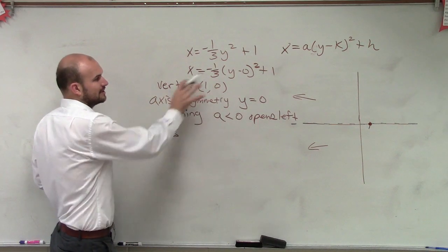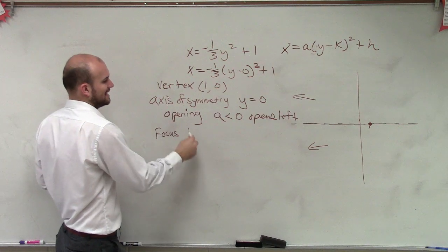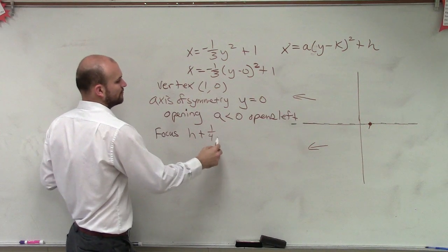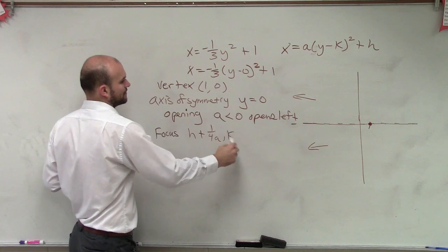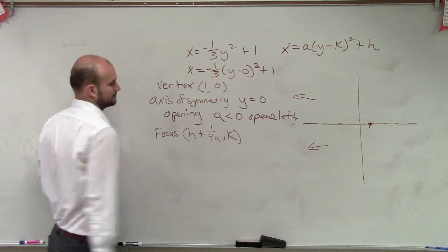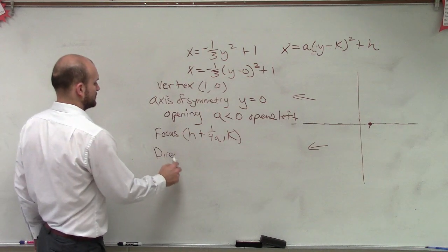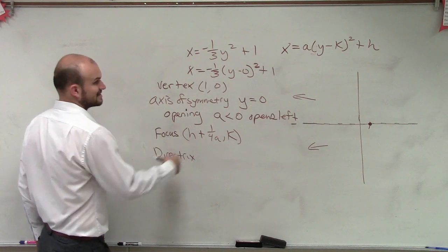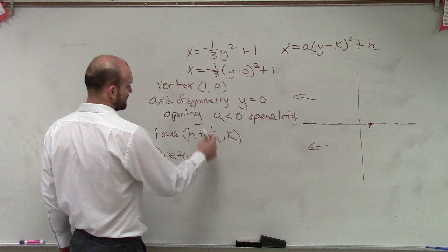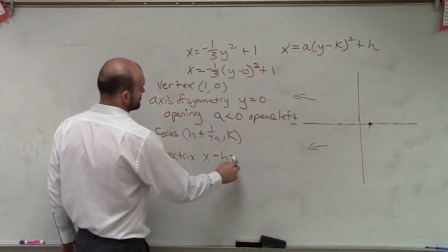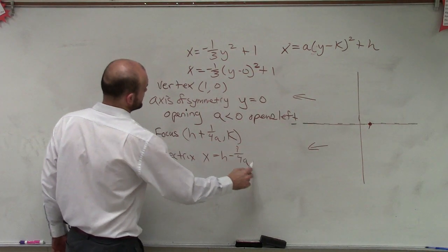So your focus, all right, is, remember, going to be h plus 1 over 4 times a comma k. Yes? And remember the directrix, since it's a horizontal line, or sorry, vertical line, it's going to be x equals h minus 1 over 4 times a.